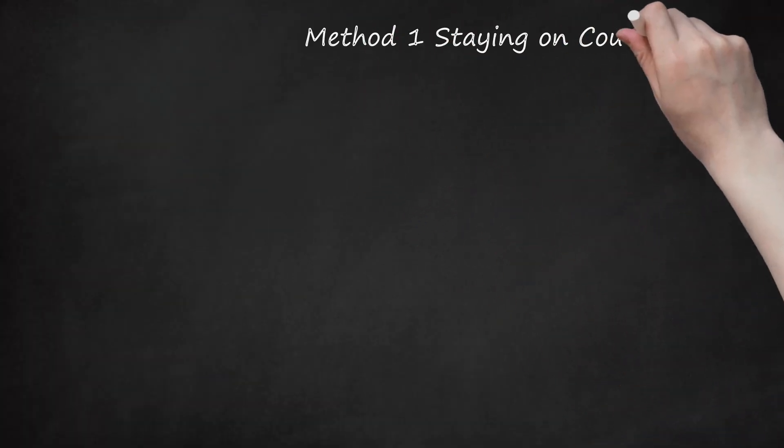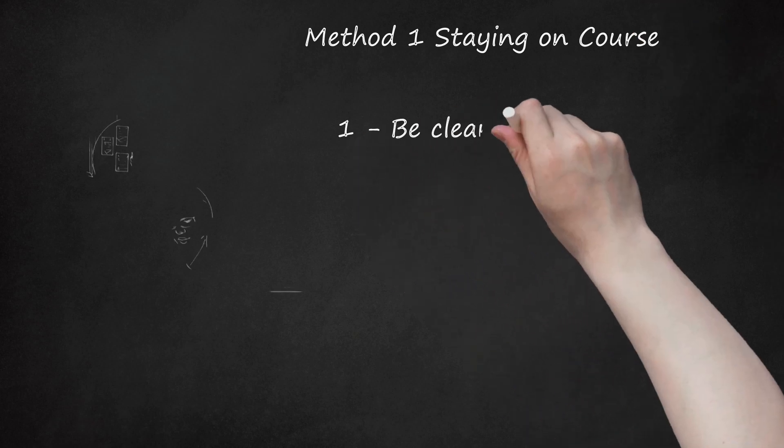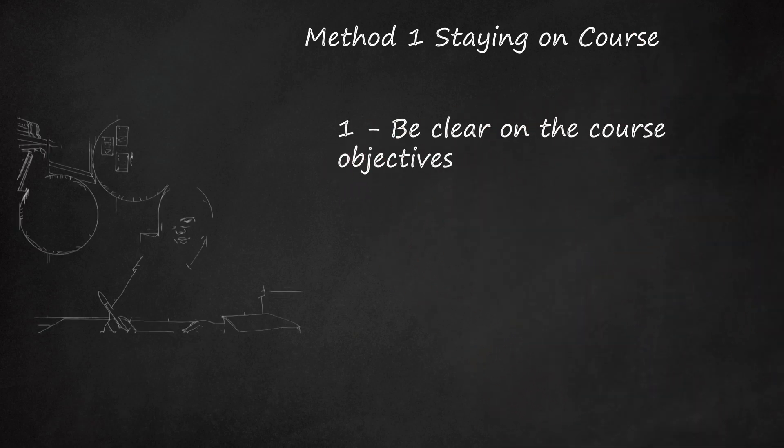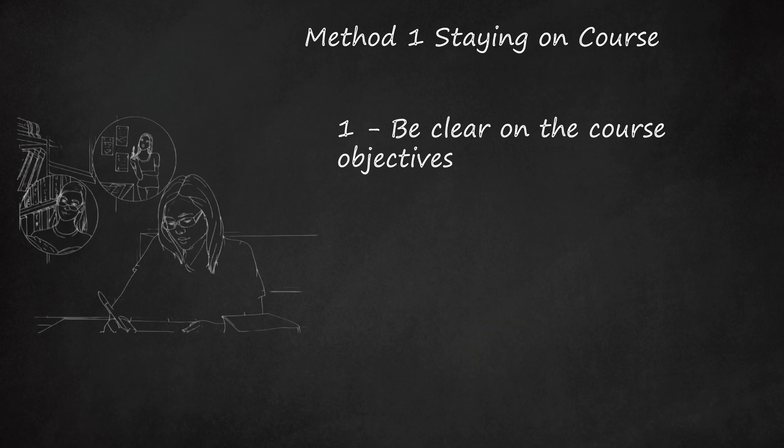Method 1: Staying on Course. Be clear on the course objectives. The goal of language and literature coursework in the International Baccalaureate Program, in English and otherwise, is to develop skills in textual analysis, oral and written communication, and recognition of contexts, themes, forms, styles, and aesthetics. For English A1, there are three major assessment objectives.